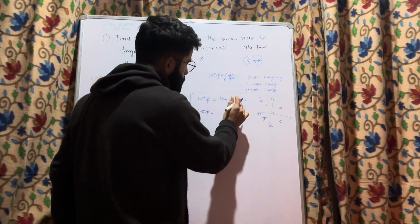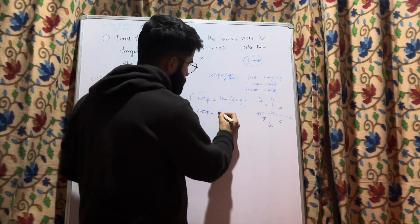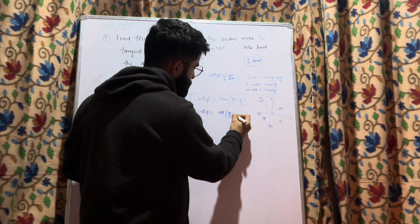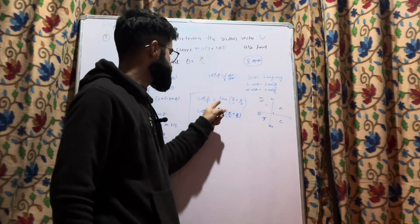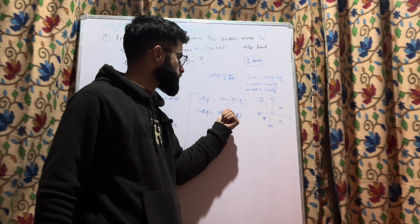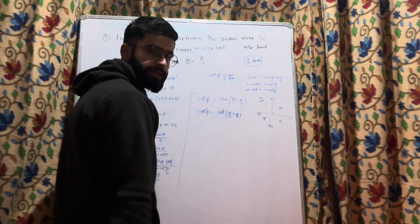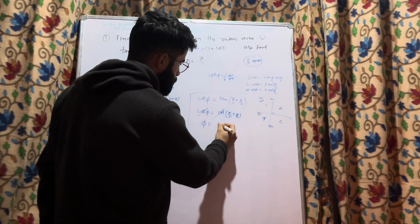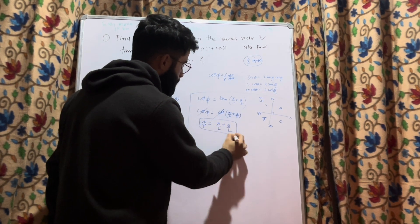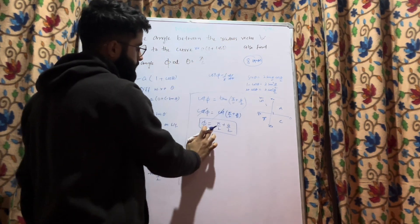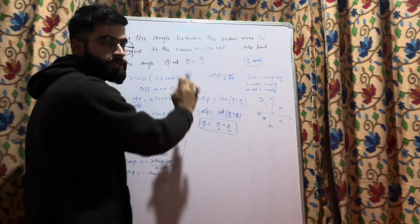Since cot φ = tan(π/2 + θ/2), and tan can be written as cot of its complement, we also have cot φ = cot(π/2 + θ/2) — noting that tan and cot are reciprocals — and so cot cancels on both sides, giving φ = π/2 + θ/2. This is the angle between the radius vector and the tangent. The second part of the question asks to find φ at θ = π/6.